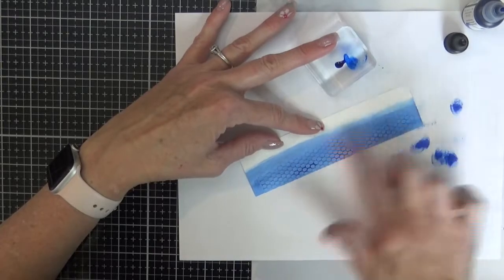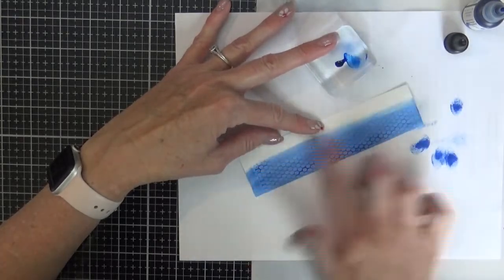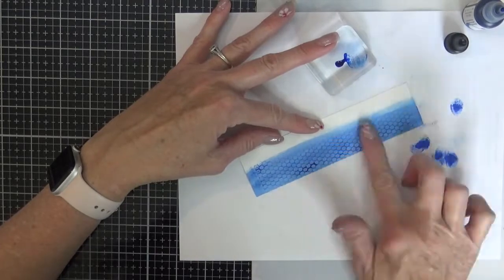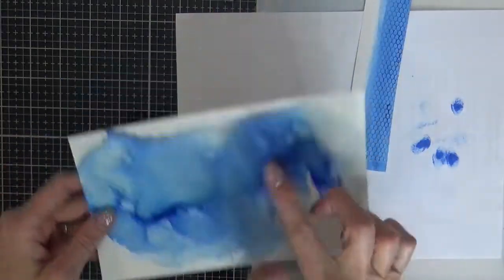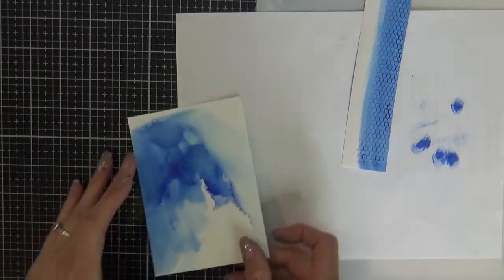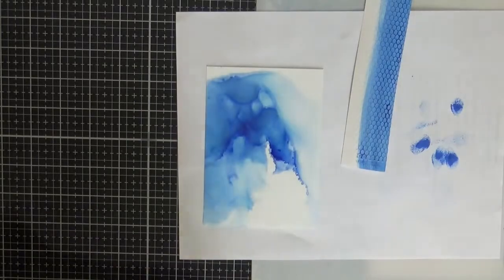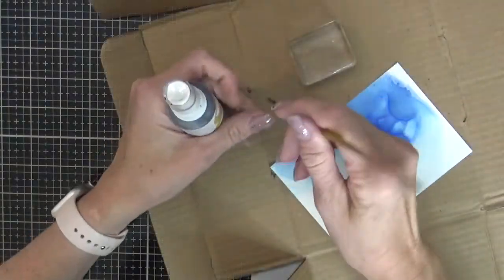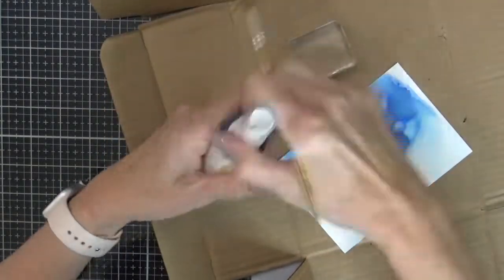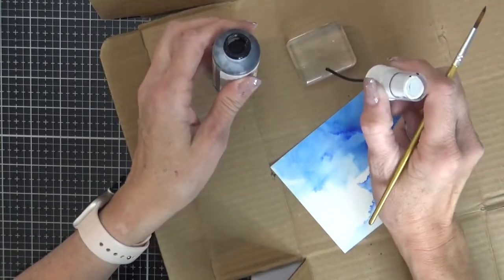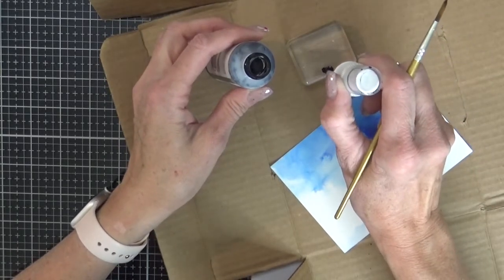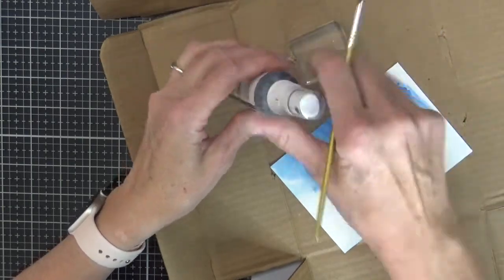I typically always use a full half sheet to create my alcohol ink backgrounds so I'll just cut down the part that I want. And then I'm going to use the jet black ink spray and a paintbrush and I will flick the ink splatters onto my panel from the acrylic block.